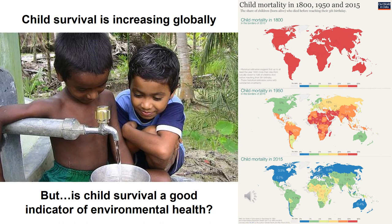One metric that well represents environmental health is childhood survival or childhood mortality. You can see from these maps that the infant or child mortality rate has drastically decreased across the globe in the last 125 or so years, especially in North America, Europe, and Russia as well. It's dropped all over the world to much lower rates due to a lot of healthcare. Why is childhood survival a good indicator of environmental health? It has a lot to do with access to clean water, air, good food, medicines, and the availability of those things has increased drastically in the last hundred or so years.